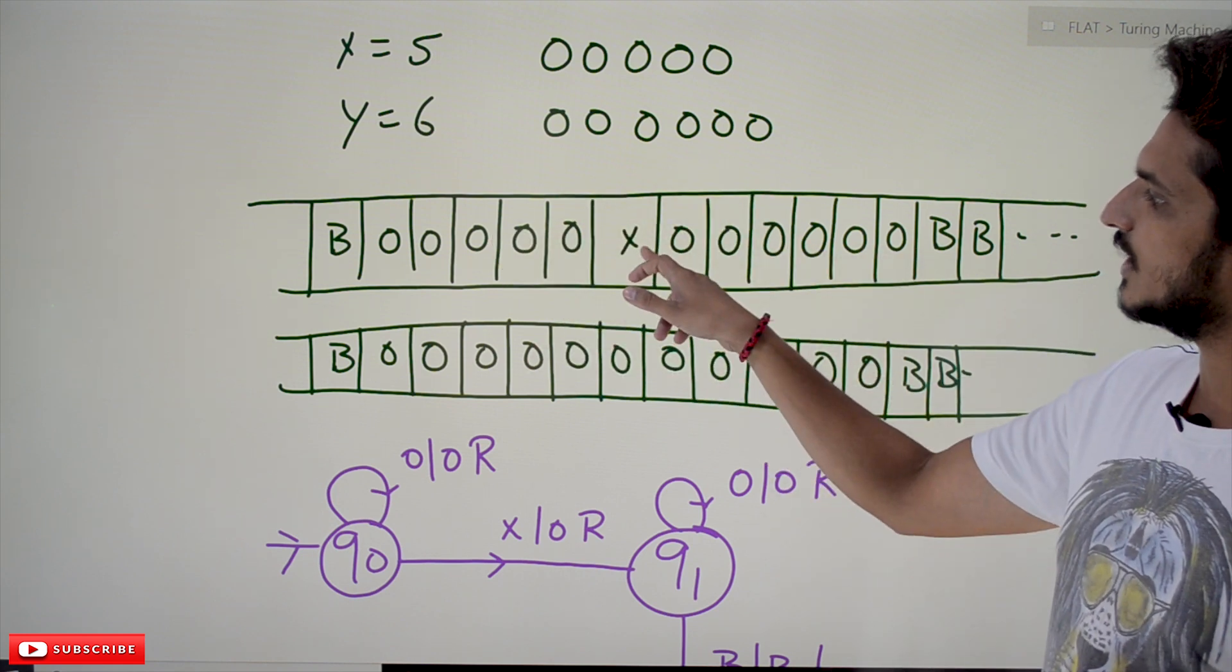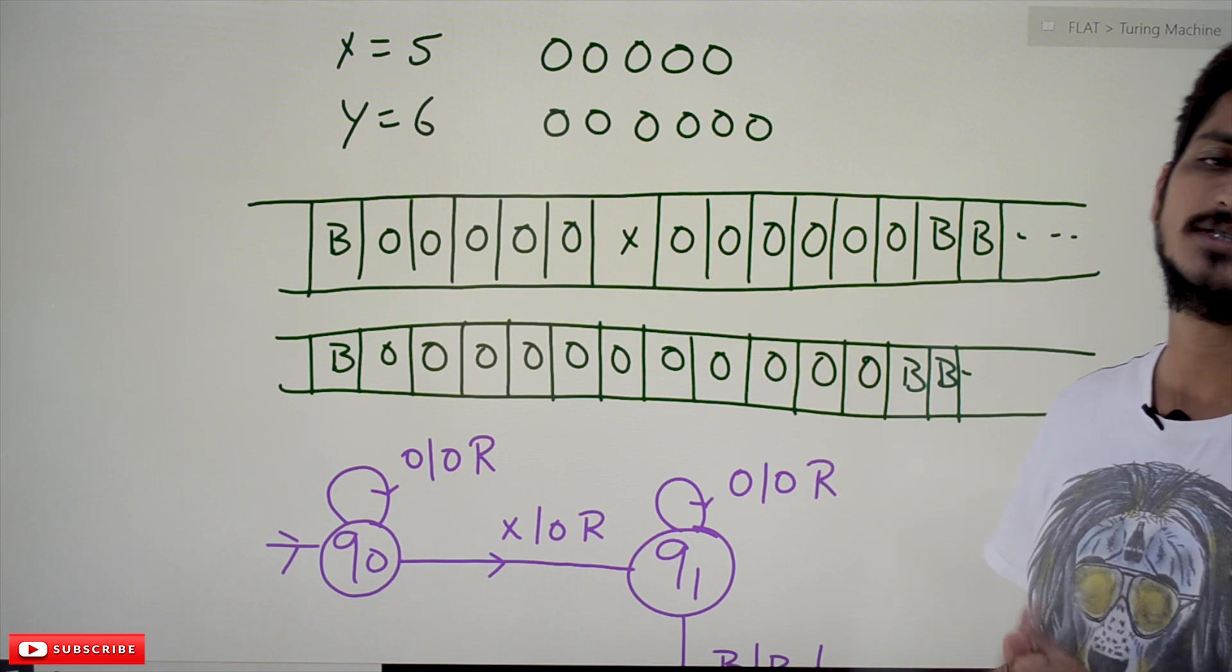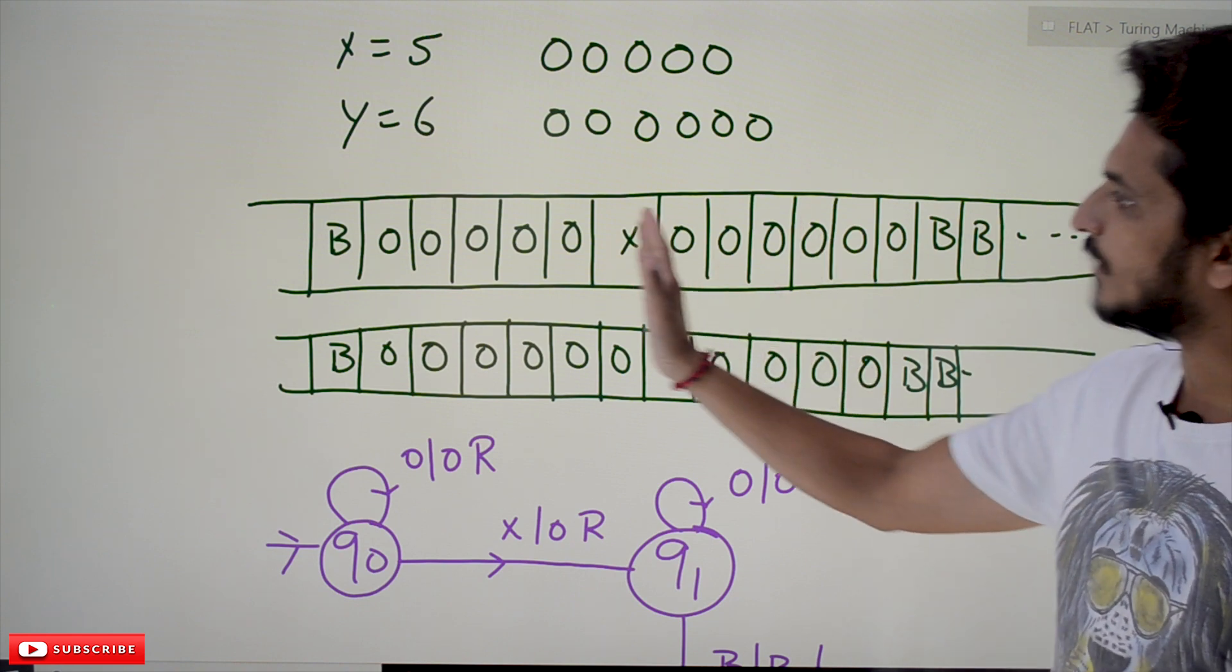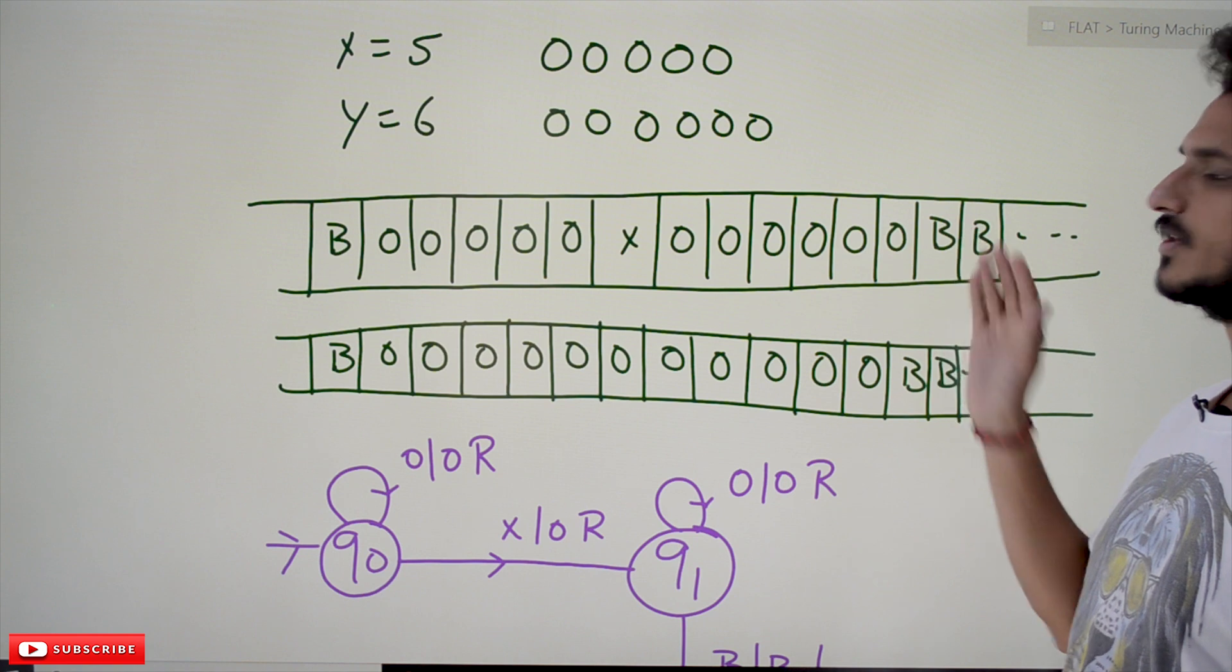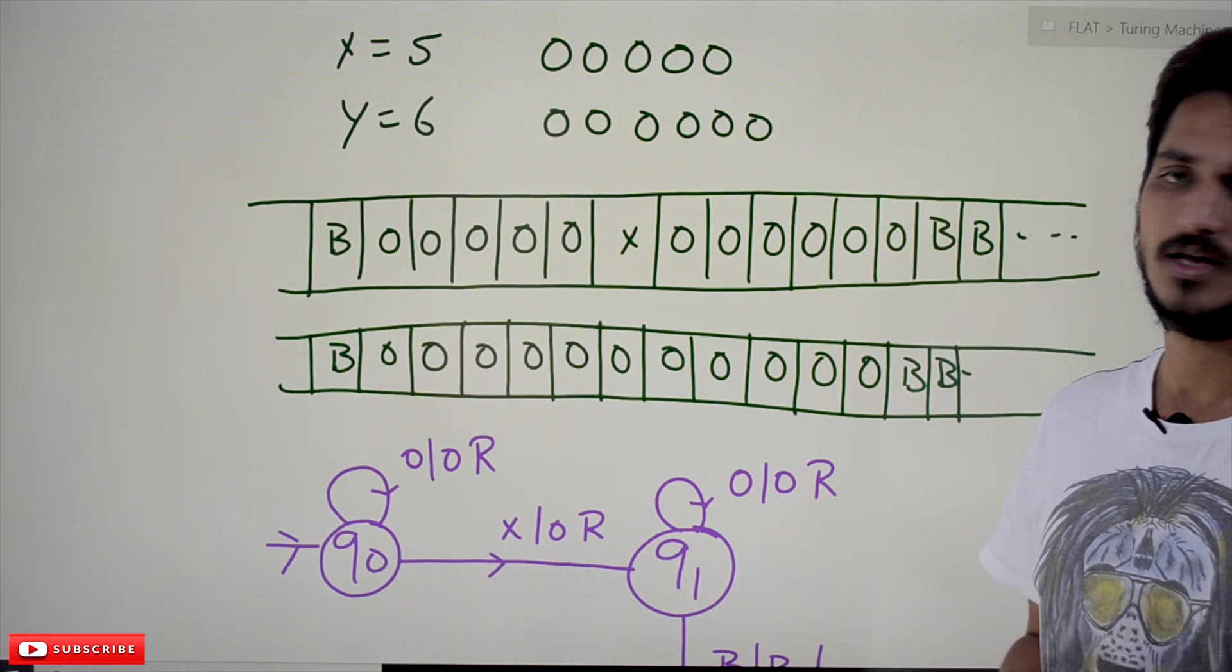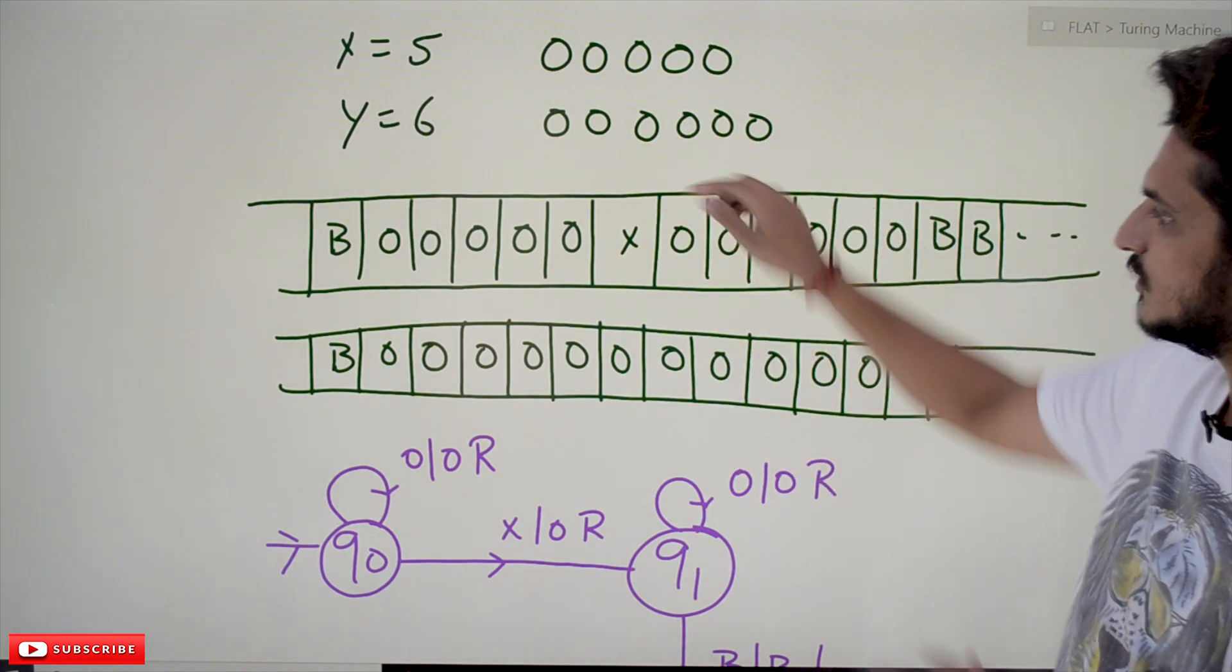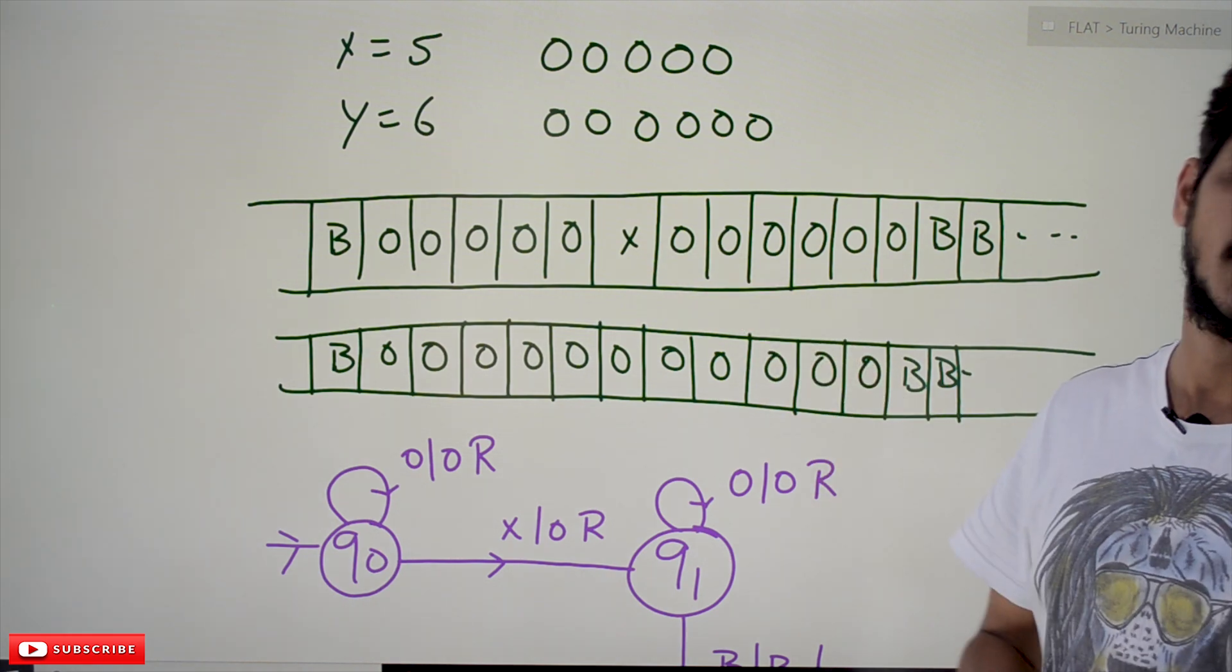In order to separate these two numbers, we are using an extra symbol called x. So up to here is one number, after that another number is there. That's why we use an extra symbol x to separate the two numbers. This is how we place the input on the tape.